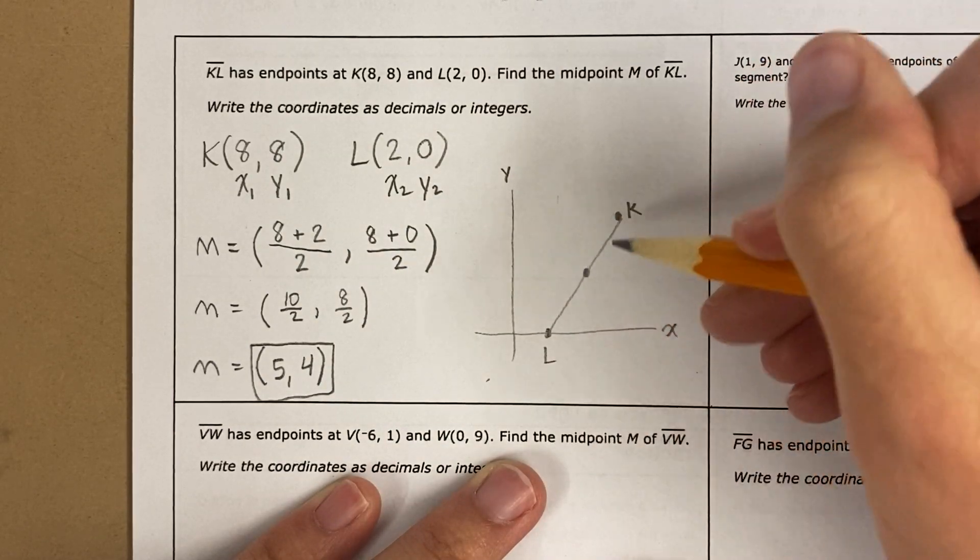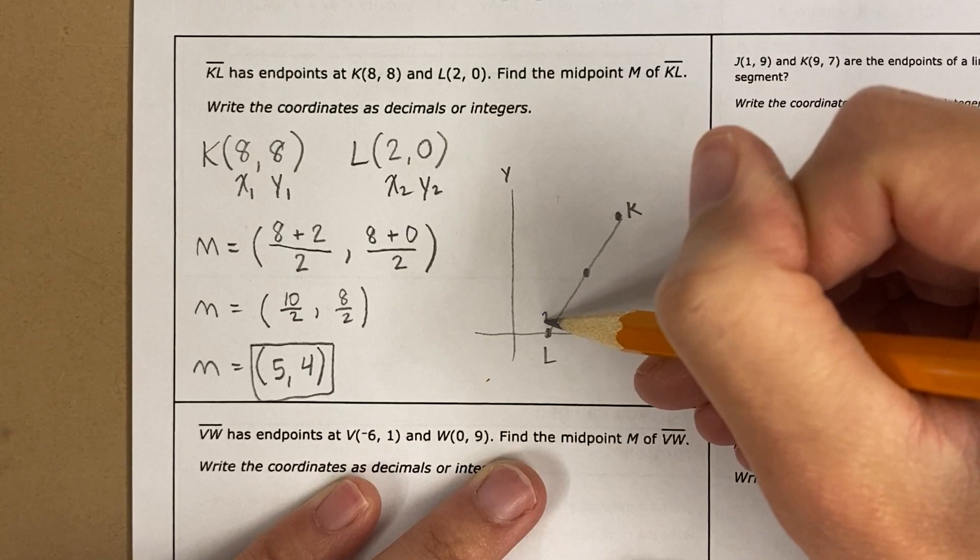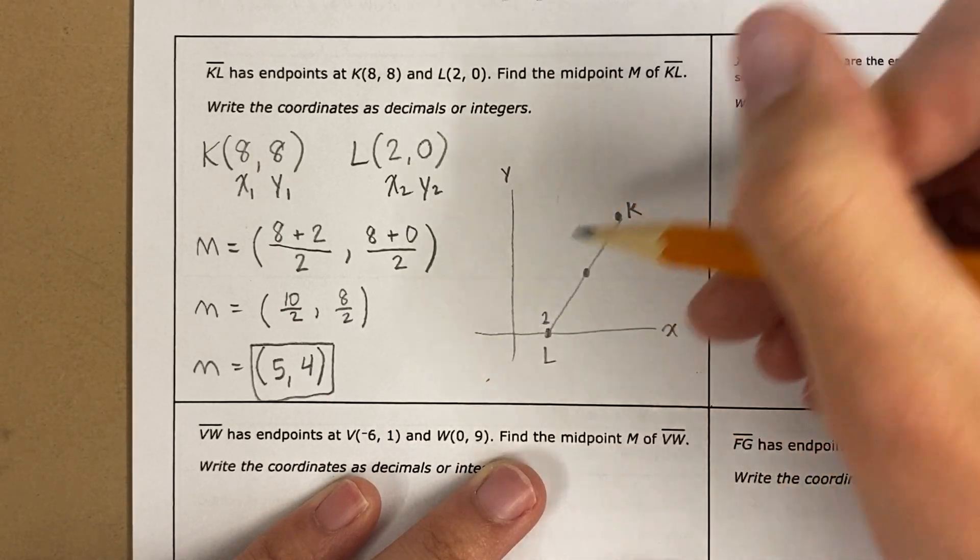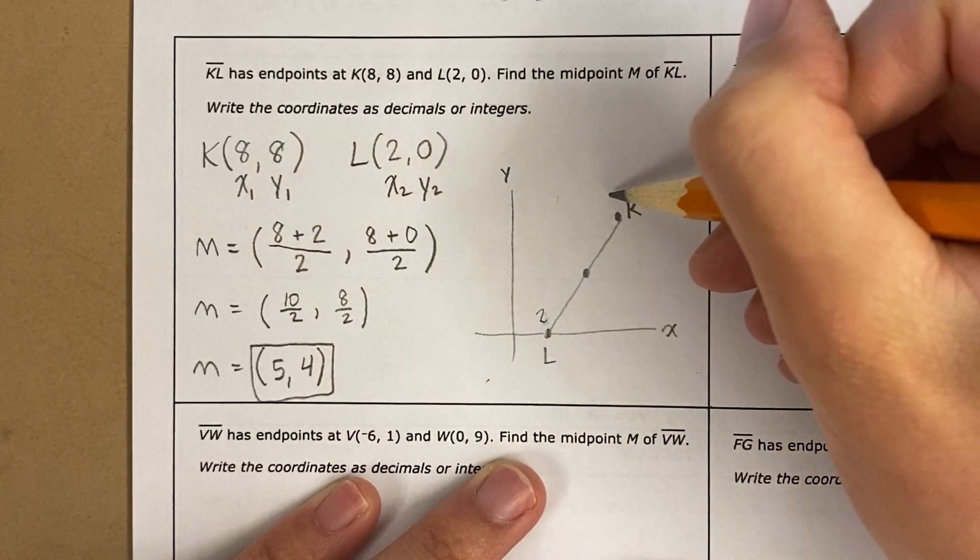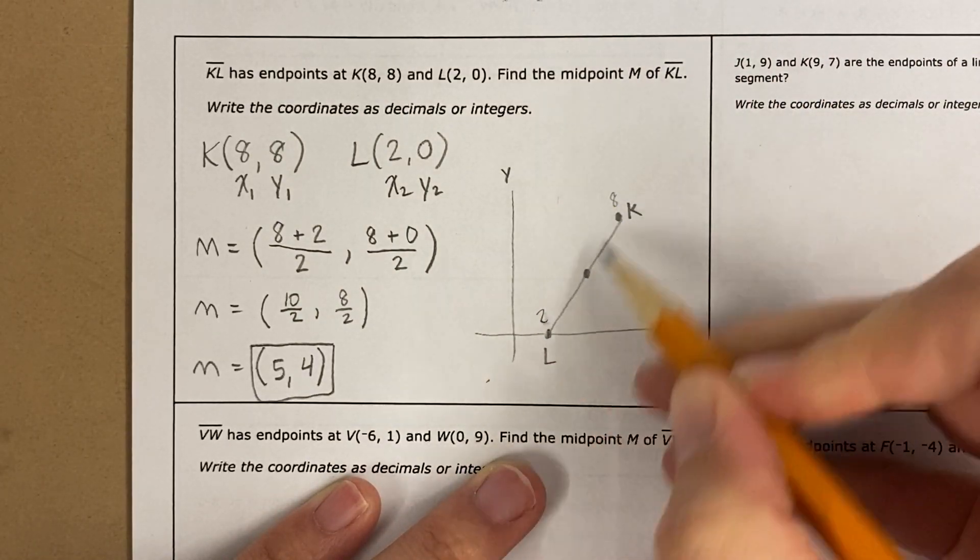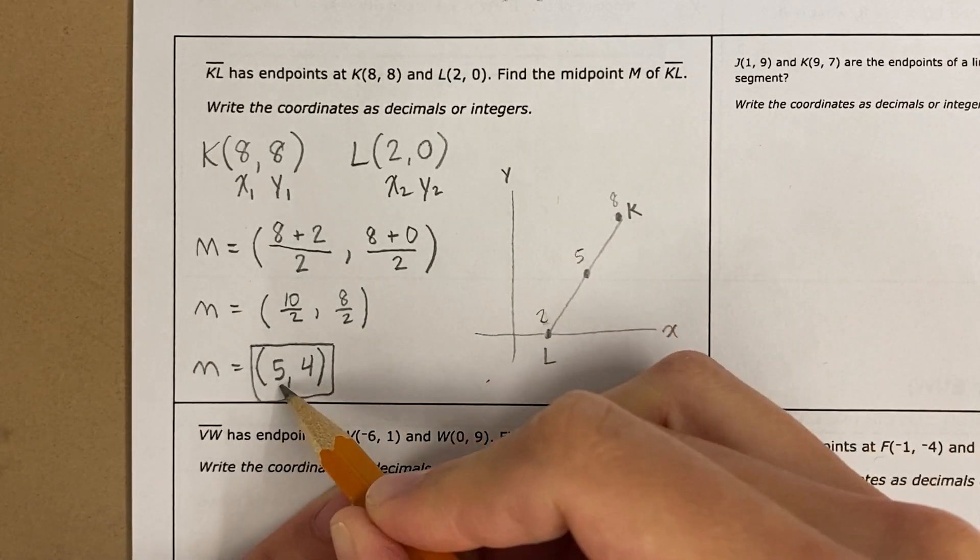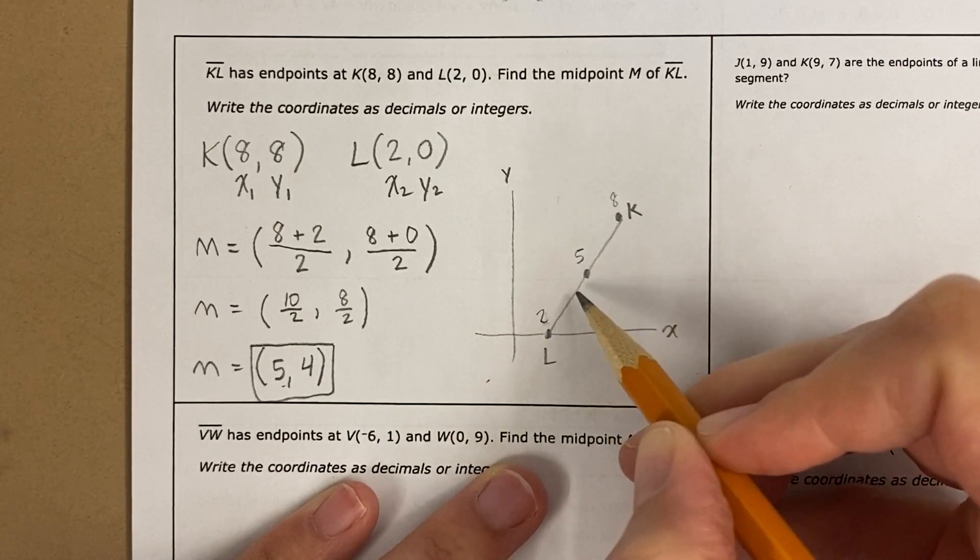Now look, 5, 4 is right here. What I want you to see is let's look at the x values first. This x value is 2. This x value is 8. The x value that's right in between 2 and 8, it's the average of 2 and 8. It's 5. It's 3 away from 2, and it's 3 away from 8. It's right in the middle.